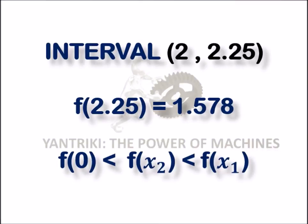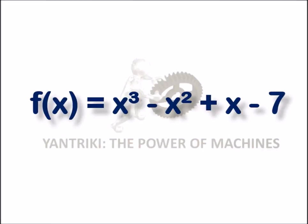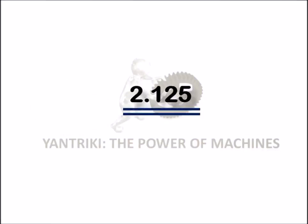Thus, after three iterations, the approximate root of the equation x³ - x² + x - 7 is 2.125.